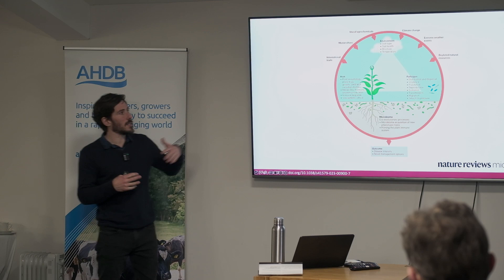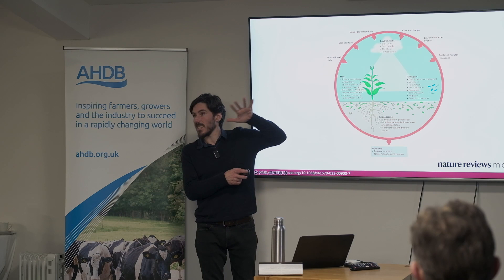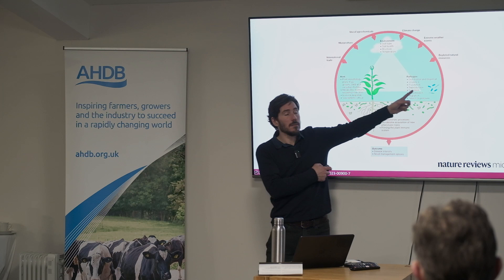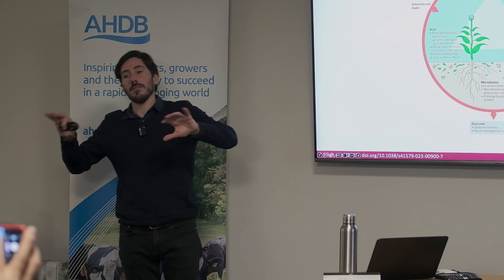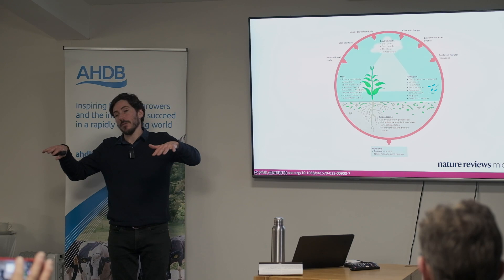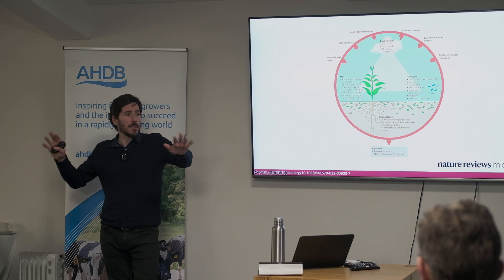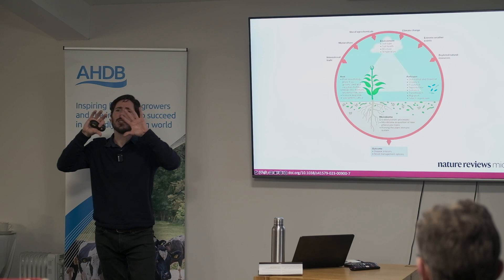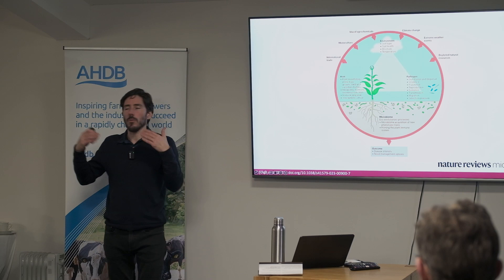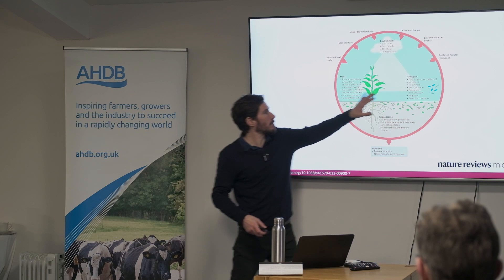The disease triangle says that for a disease outbreak you need the host plant present, the pathogen present, and the right environment. When environmental conditions are optimized, the pathogen can cause problems. The pathogens are always there — forget the idea that fungicides create a sterile environment. It's the environment that dictates whether they cause disease at an economic threshold level.